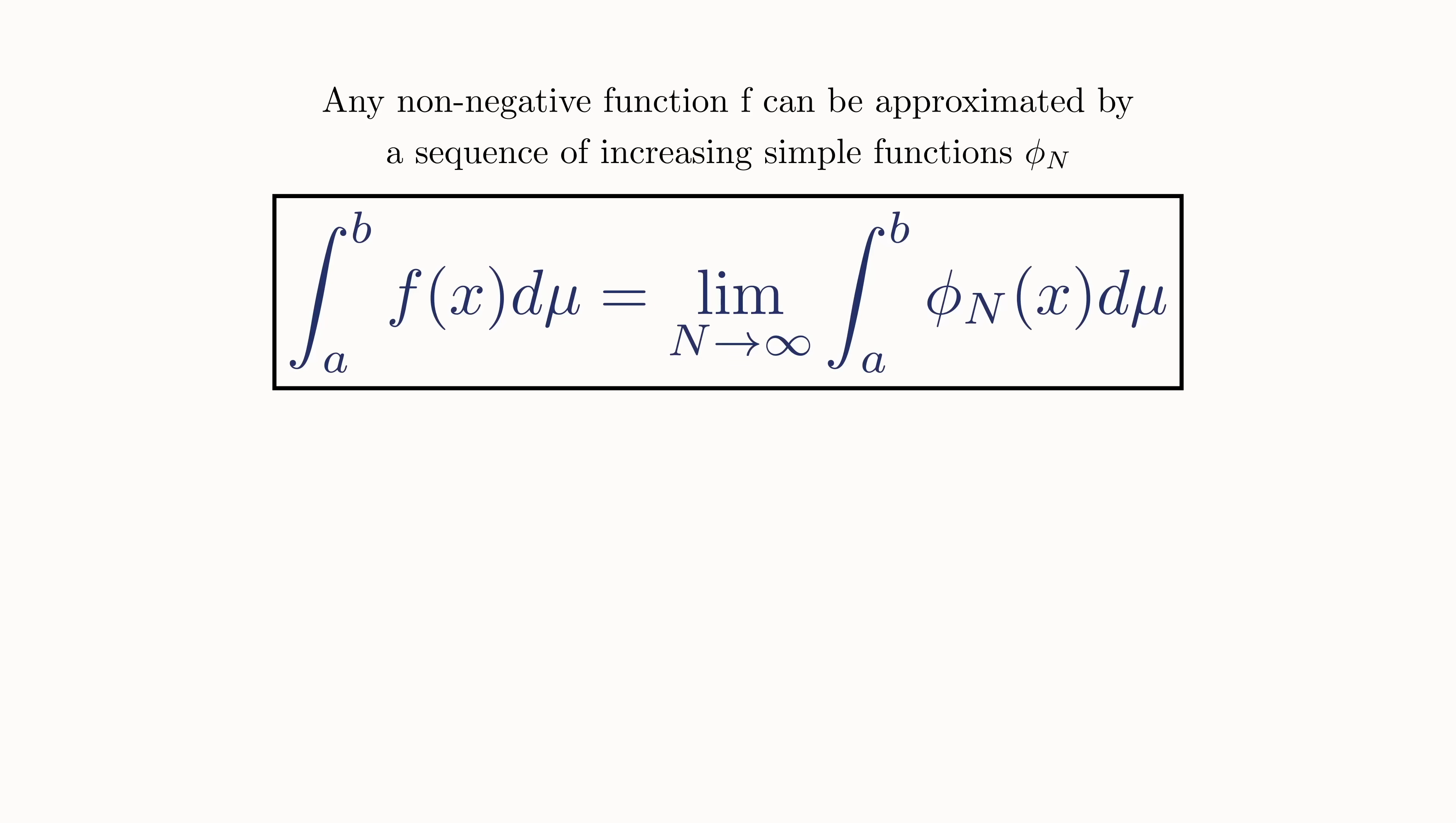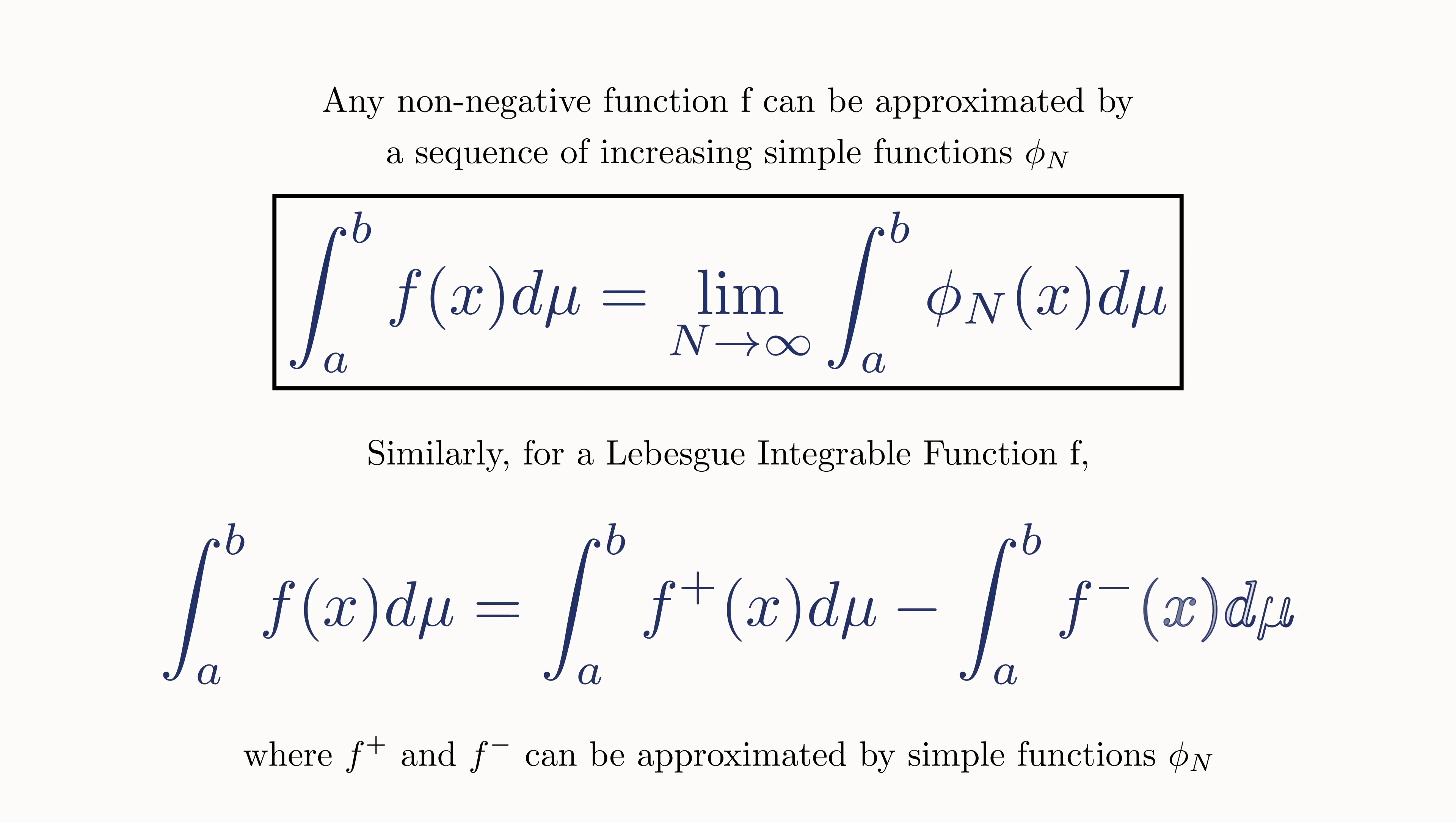The final step to define this integral for its full class of functions is to just extend this approach. For sections where a function is negative, we take the absolute value and again approximate using simple functions. We then just subtract this contribution from the contribution where the function is positive. This allows us to find the Lebesgue integral for almost any function you can think of.